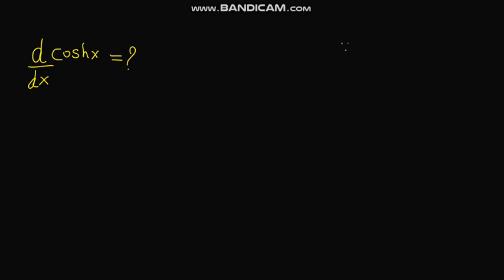In this video we have to find the value of the derivative of hyperbolic cos x. We know that hyperbolic cos x equals e to the power x plus e to the power negative x, upon 2. So we write the derivative of e to the power x plus e to the power negative x upon 2, with respect to x.